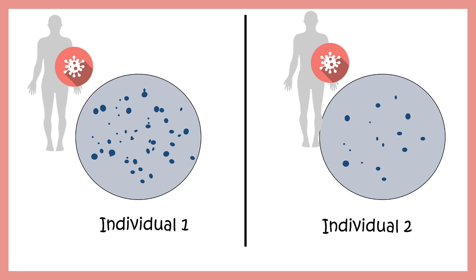We can also compare how strongly an individual has mounted an immune response against a viral infection. For example, comparing two individuals, the one on the left has more spots in the ELISPOT assay, indicating a stronger immune response with more cytokine-producing Th1 cells compared to person 2. This type of comparative analysis can be performed using ELISPOT assay data.